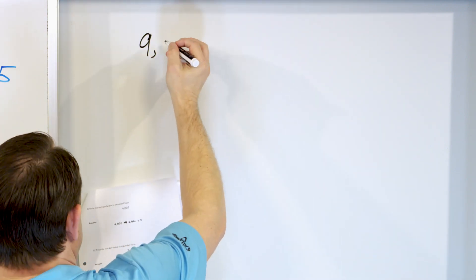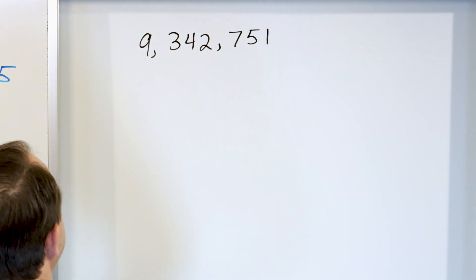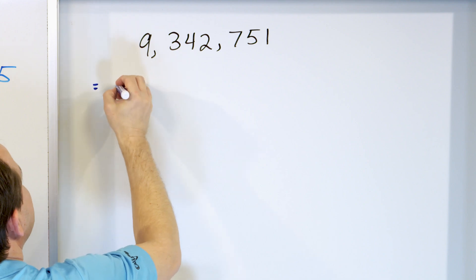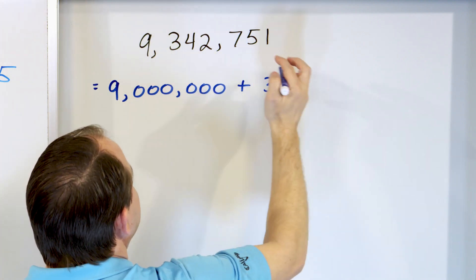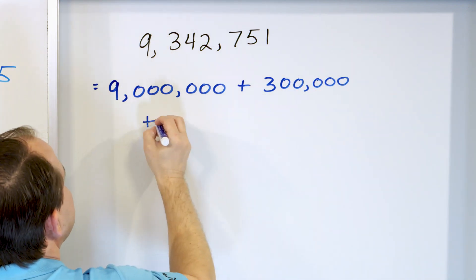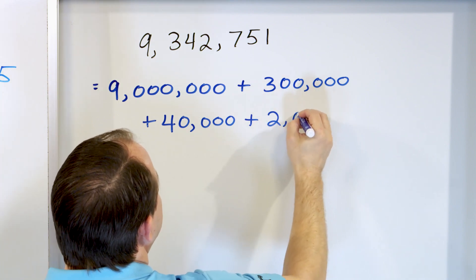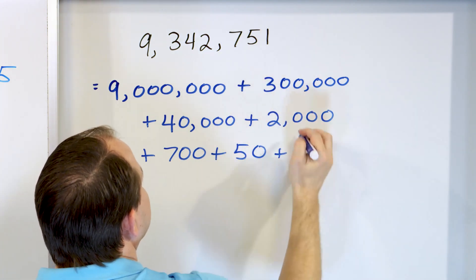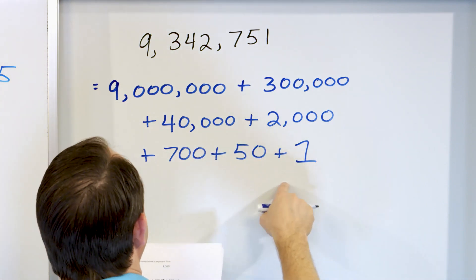We're going to make it enormous, gigantic — just to give you a little practice with a really big number. Let's take 9,342,751. This is ones, tens, hundreds, thousands, ten-thousands, hundred-thousands, and here's millions. We have nine of them, so that's worth nine million. The 3 is in the hundred-thousands place, so it's worth 300,000. The 4 is in the ten-thousands, but we have four of them, so it's worth 40,000. The 2 is in the thousands place, so it's worth 2,000. The 7 is in the hundreds place, so it's worth 700. The 5 is in the tens place for 50, and the 1 is in the ones place. So: nine million plus 300,000 plus 40,000 plus 2,000 plus 700 plus 50 plus 1.